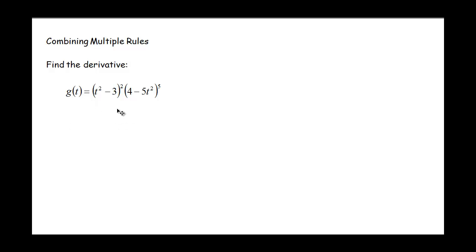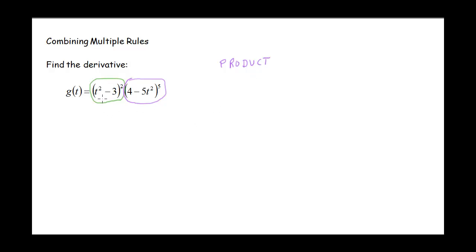Now for this next one with g of t: looking at the top, it says combining multiple rules, so we're probably going to need multiple rules. The function g of t looks like it has two different parts being multiplied together, so the first thing to use is the product rule. When we go to take the derivative of each part, we'll need the power rule and the chain rule on each part.